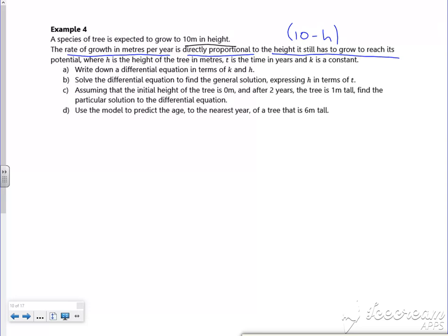The rate of growth per year, dh/dt, is proportional to 10 minus h. If I introduce the constant of proportionality, I get dh/dt = k(10-h). That's part A, you're done.